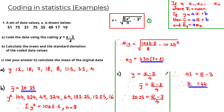You need to be comfortable using coding equations to find the mean or standard deviation of either the coded data or the original data. As we saw in this example, at times you'll need to rearrange the equation to find the required value. Let's have a look at the next problem.